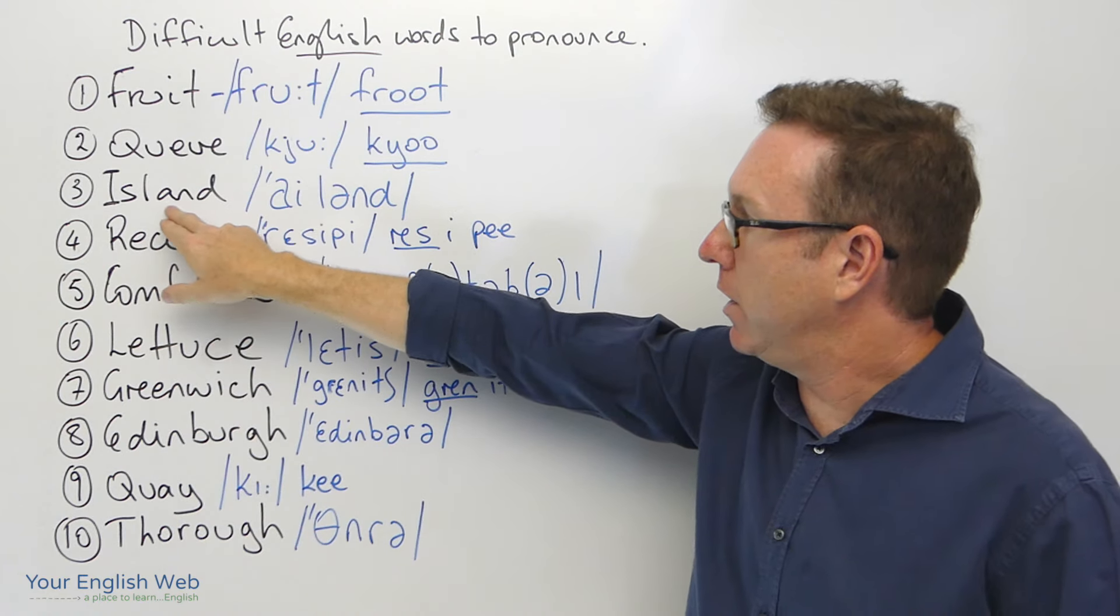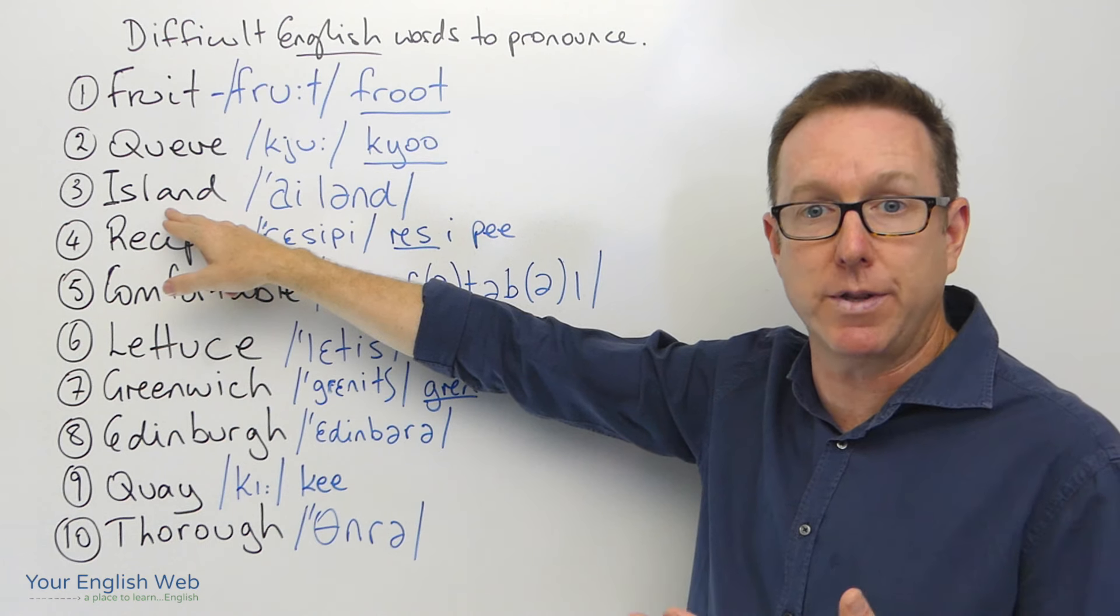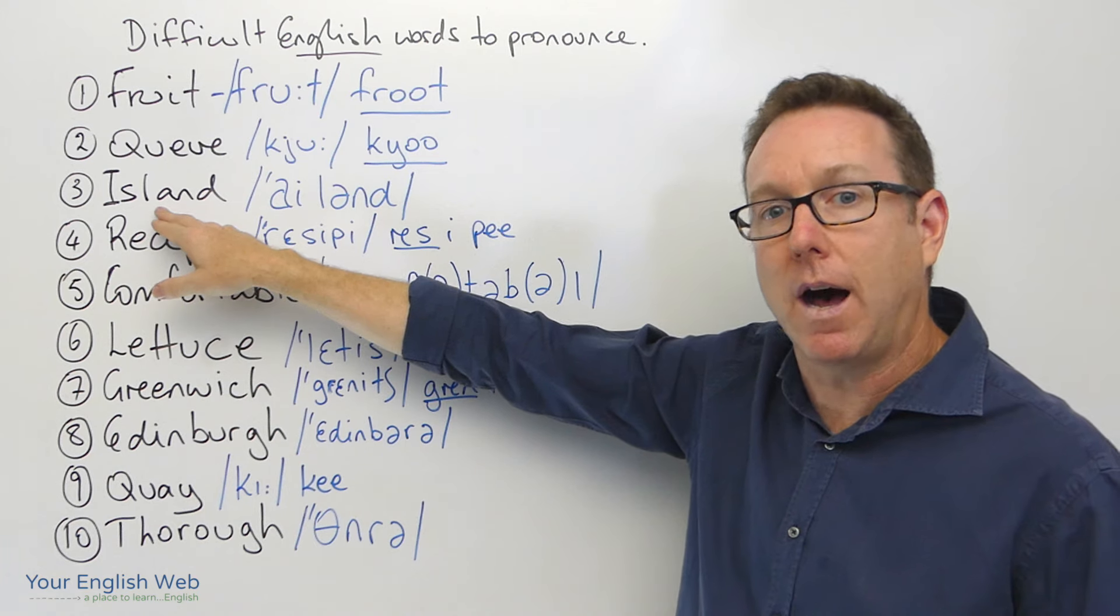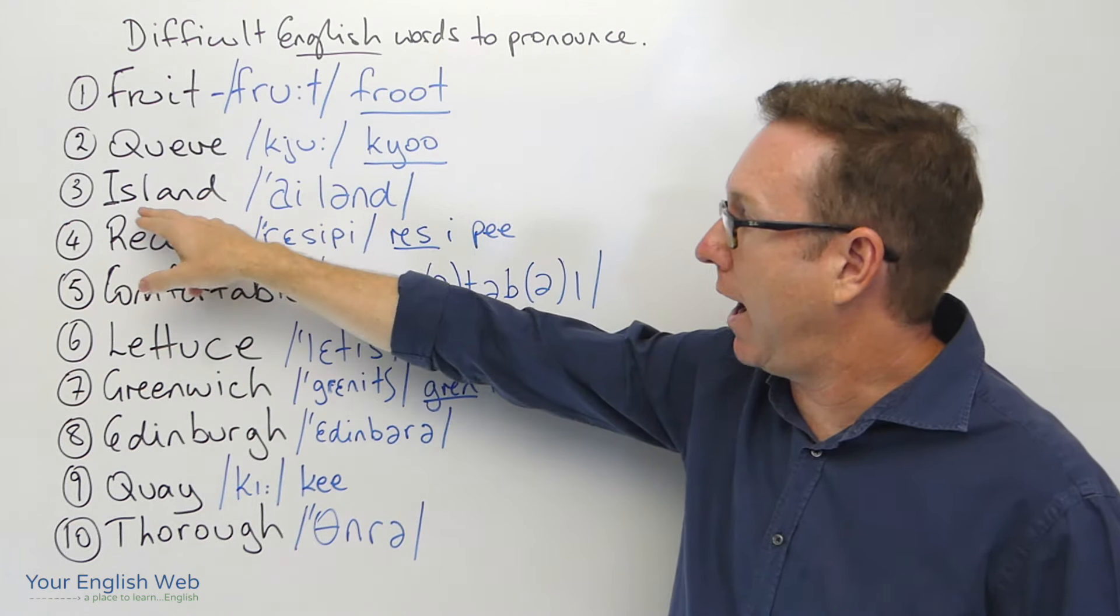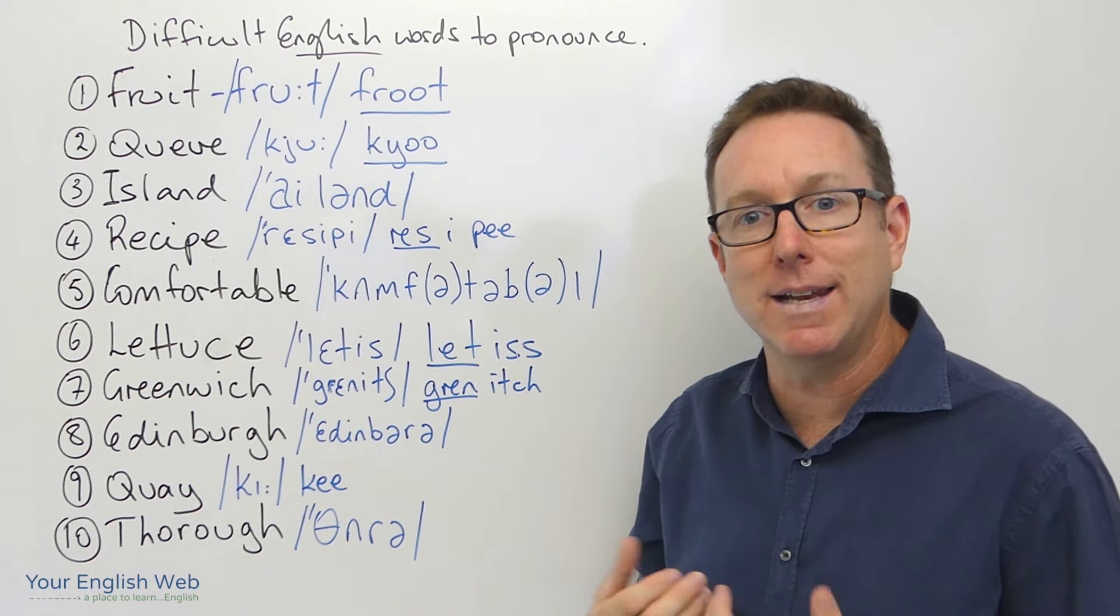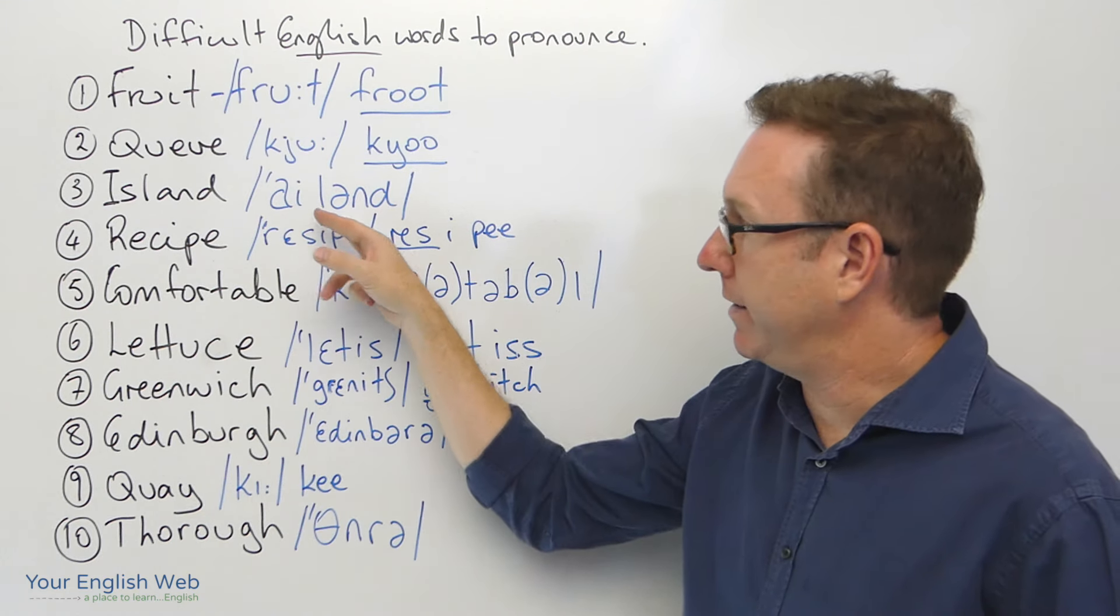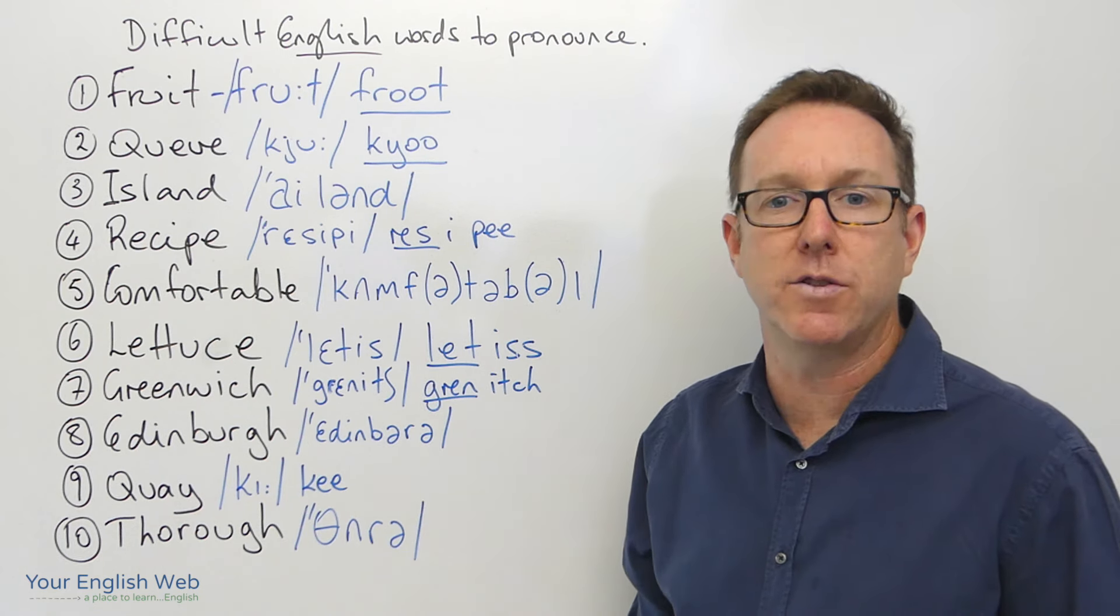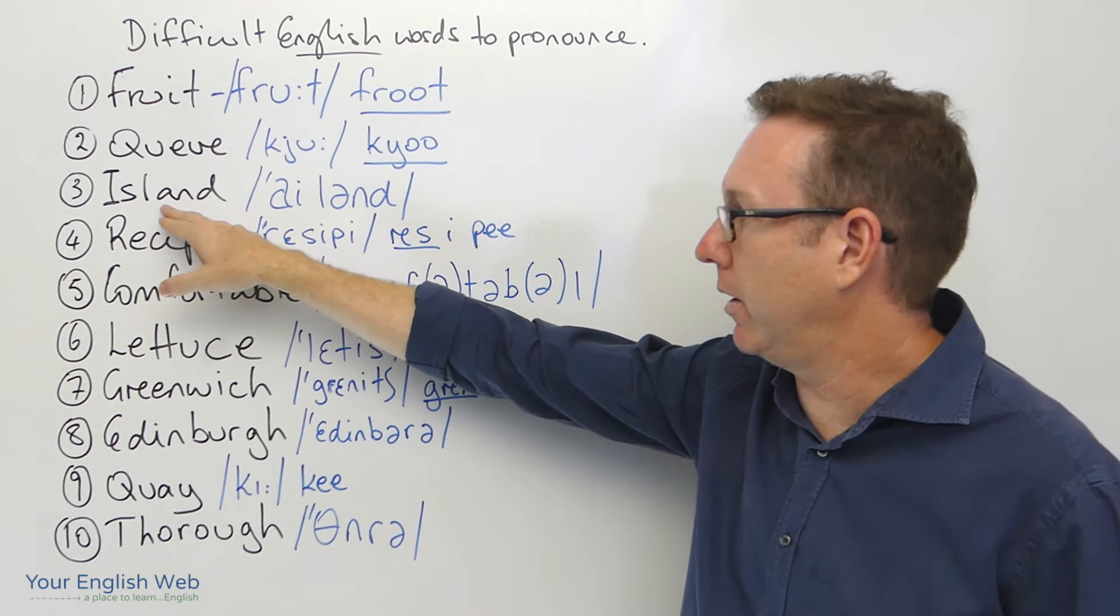The next one here looks fairly simple, but it's amazing how many people pronounce this word incorrectly. The pronunciation is island, island, and we can see here that there's no S. Remember the S is silent. Island, island, island. There's no S sound. It's not island, it's not island, it's island, island.